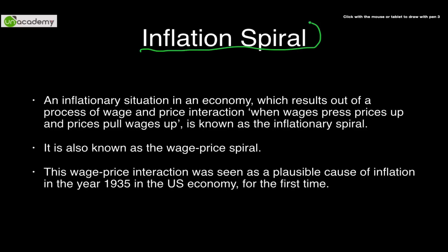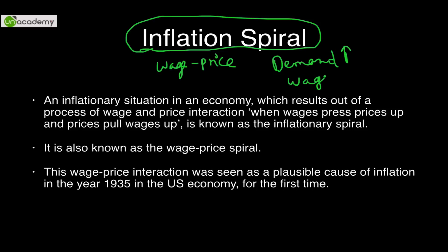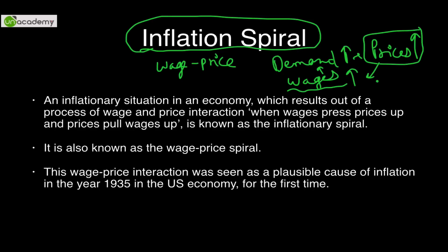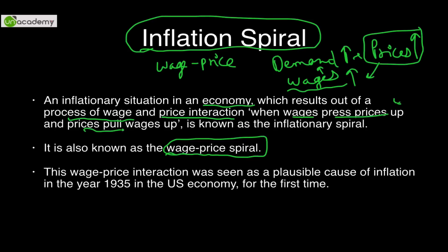The inflation spiral, also called the wage-price spiral, works as follows: demand for goods increases because wages are high, so producers raise prices. Higher prices cause workers to demand higher wages, which again pulls up demand, which again raises prices. This becomes a vicious trilogy: increased demand → increased prices → increased wages → and repeat. In definition terms, it is an inflationary situation caused by the process of wage and price interaction — wages press prices up and prices pull wages up.